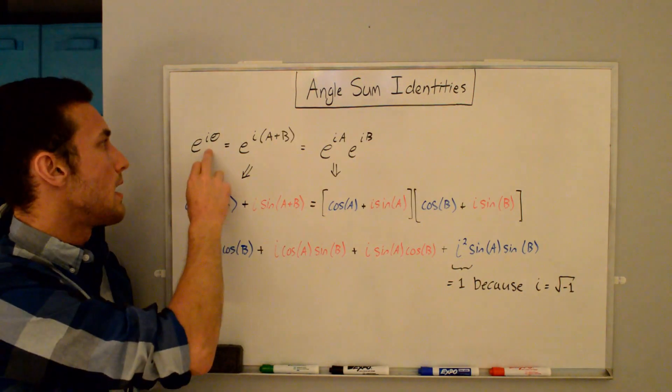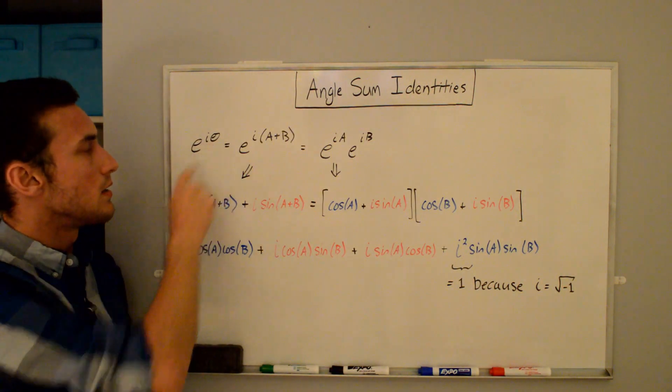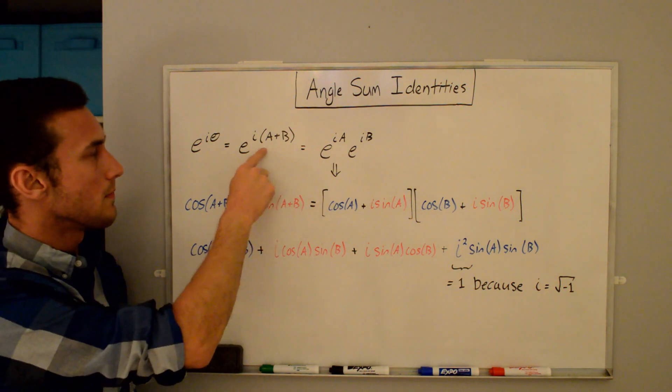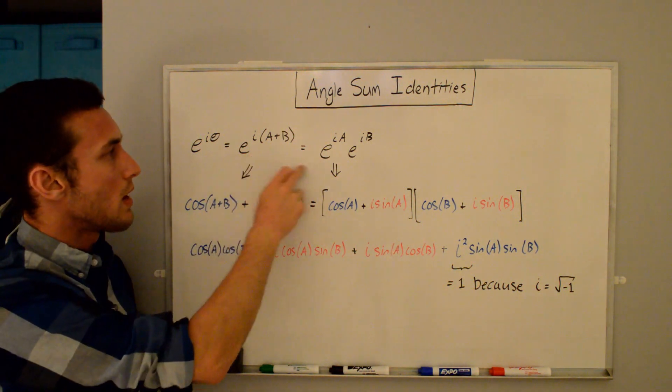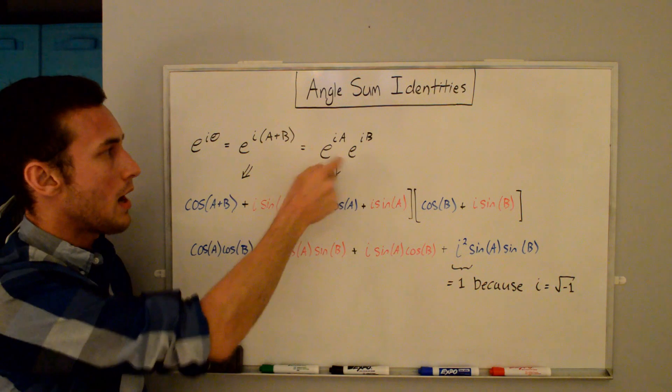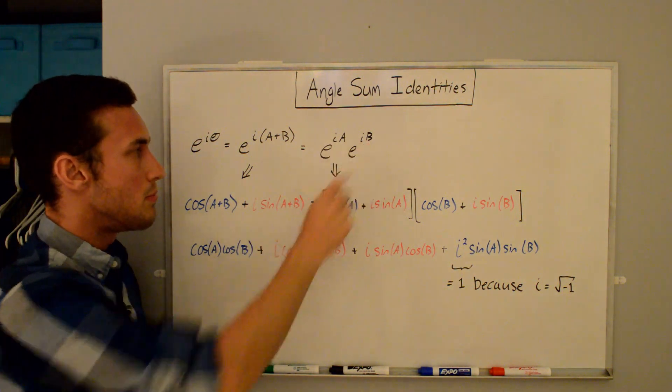Okay, so I've rewritten e^(iθ) here, and we're just going to plug in θ = A+B. So that's what I did here. And then you can write this as the product of e^(iA) times e^(iB).